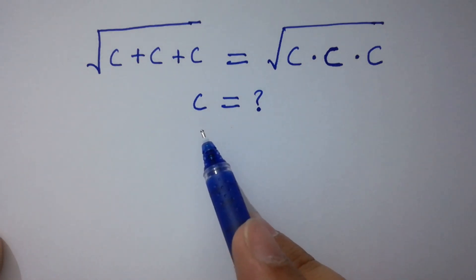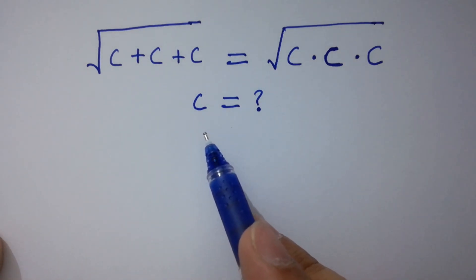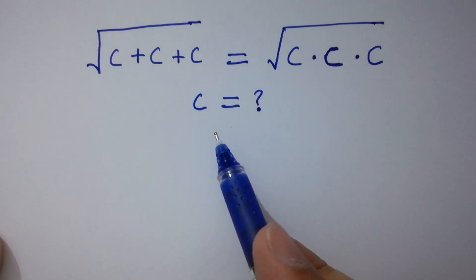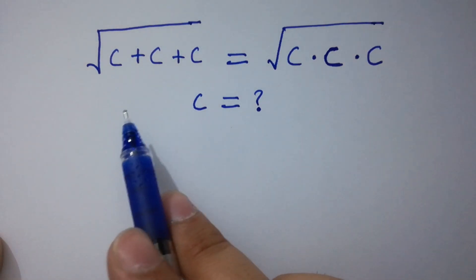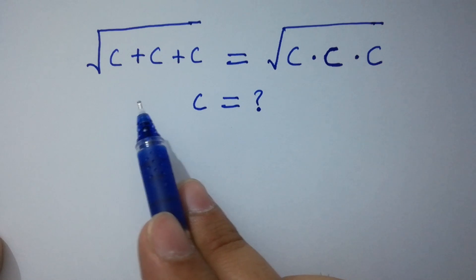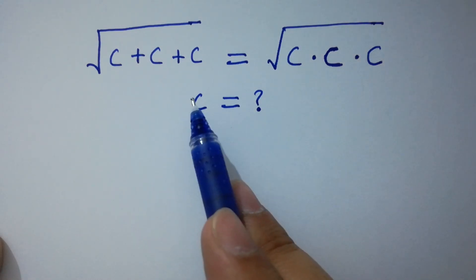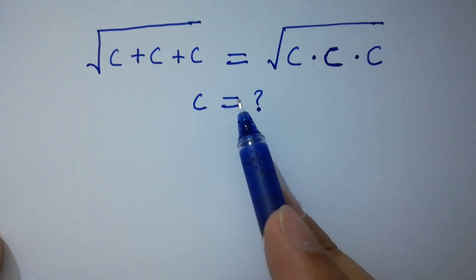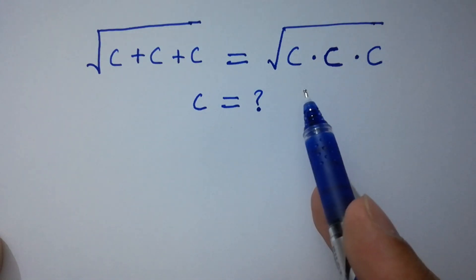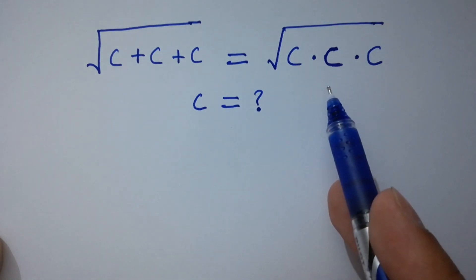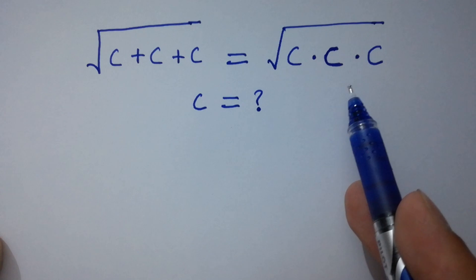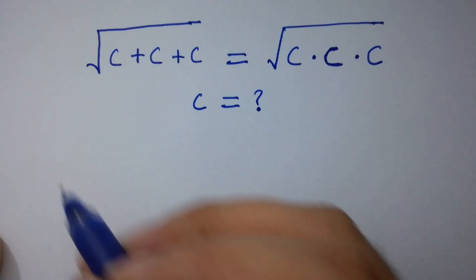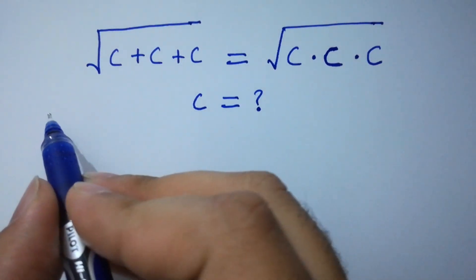Hello friends, find the value of c if square root of c plus c plus c equals square root of c times c times c. Let's have a solution.